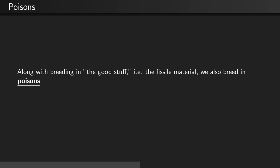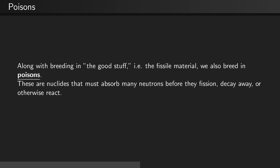Along with breeding in the good stuff, that is, the fissile material, we also breed in poisons. Poisons are nuclides that must absorb many neutrons before they fission, decay away, or otherwise react.